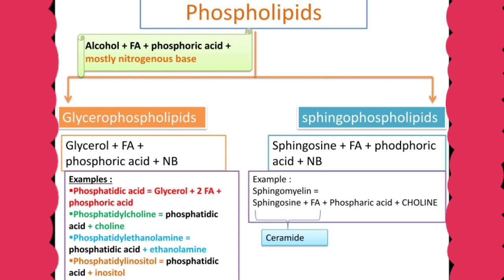Coming to phospholipids in detail — their basic composition is alcohol, fatty acid, phosphoric acid, and most phospholipids contain a nitrogenous base like choline and ethanolamine. The basis for classifying phospholipids into glycerophospholipids and sphingophospholipids is the type of alcohol. If the alcohol present is glycerol, those are called glycerophospholipids. If the alcohol is sphingosine, those are called sphingophospholipids.